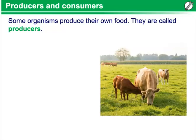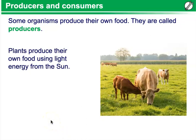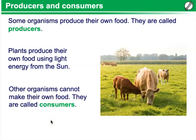Producers and Consumers. Some organisms produce their own food — these are called producers. Plants produce their own food using sunlight. Other organisms cannot make their own food; they are called consumers. Some types of bacteria can also make their own food by using light or chemical reactions.